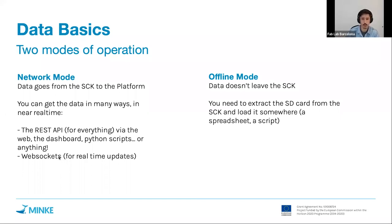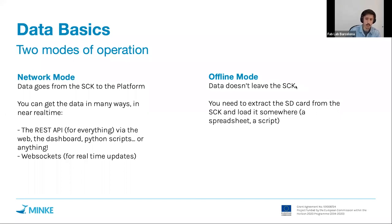In offline mode, the data doesn't leave the Smart Citizen Kit at all. If you set the kit to only record on the SD card — even if you configure WiFi, for instance to get a timestamp from the internet — the data won't leave the SD card. It will always stay on the SD card only. You need to physically extract the SD card from the kit to load the data somewhere. In the future we may provide access via USB cable, but that's not supported at the moment.